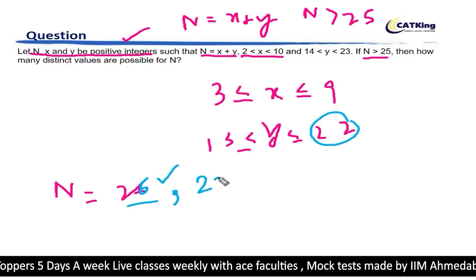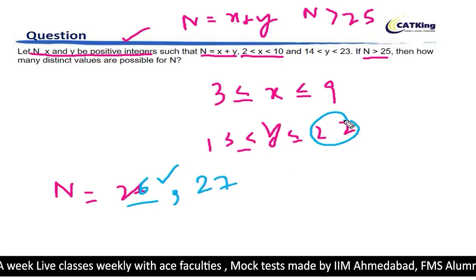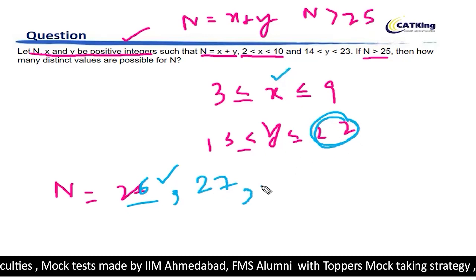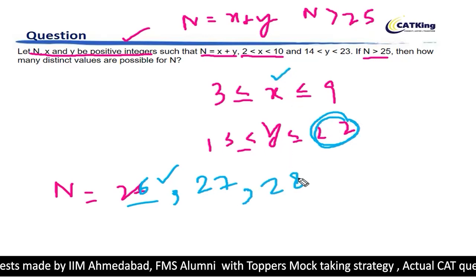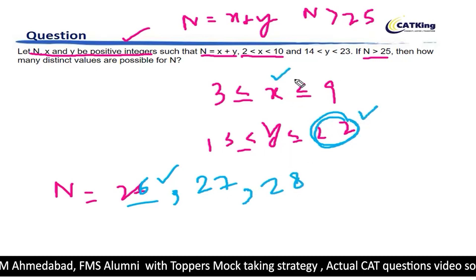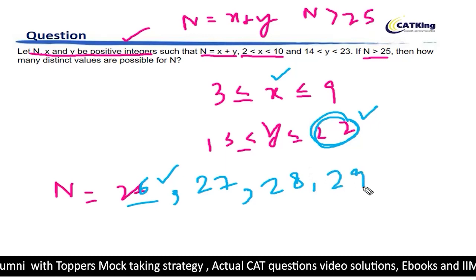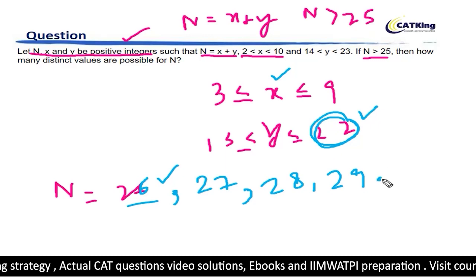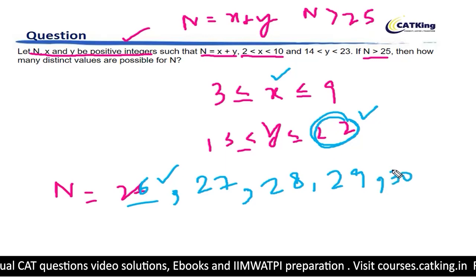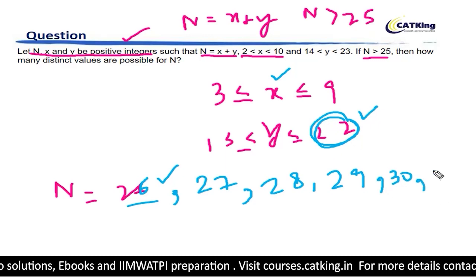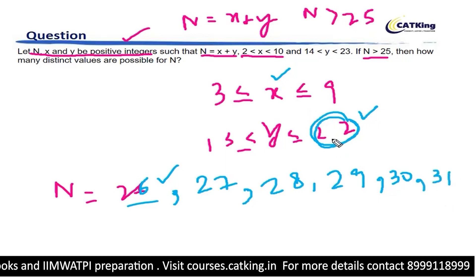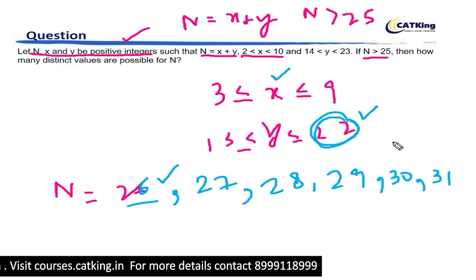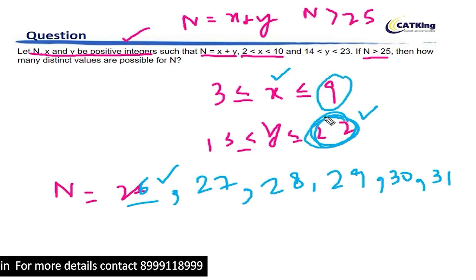Similarly, can I obtain 27? If I use 22 from here and 5 from here, I can obtain 27 also. Similarly, I can obtain 28 also if I use 22 and 6 from here. Similarly, I can obtain 29 also if I use 22 and 7 from here. Similarly, 30 also I can obtain if I use 22 and 8 from here. Similarly, 31 also I can obtain if I use 22 and 9 from here. Now beyond this, 31 is when I have used the highest values of X and Y.